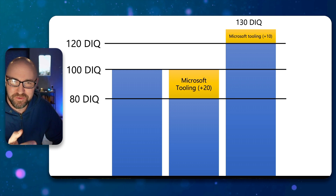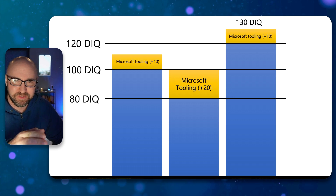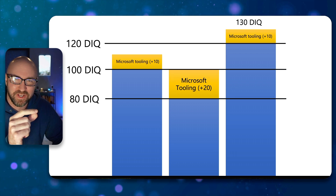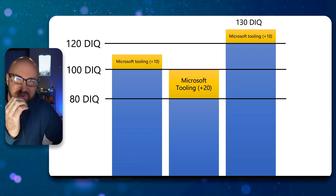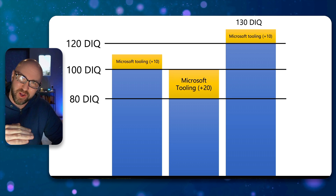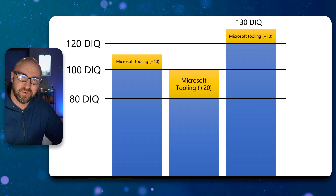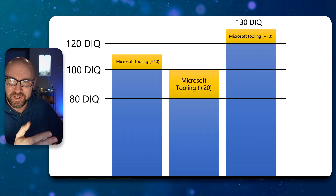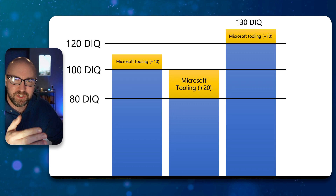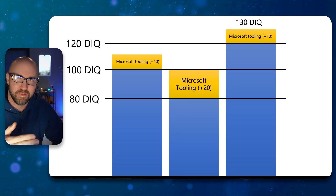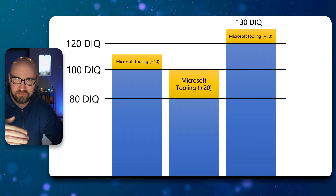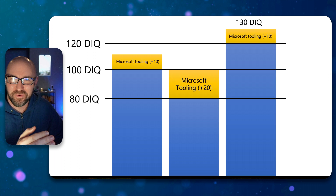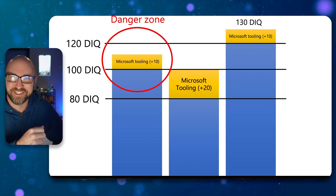So how does this affect you? If you're one of the average developers and you get that little bit of extra boost from the tooling, you're still not that much better than the below-average developer who also has all that tooling. The tooling costs the same amount of money, but you are more expensive. So your competition is coming from those below-average baseline developers — and therefore I would call this a danger zone.